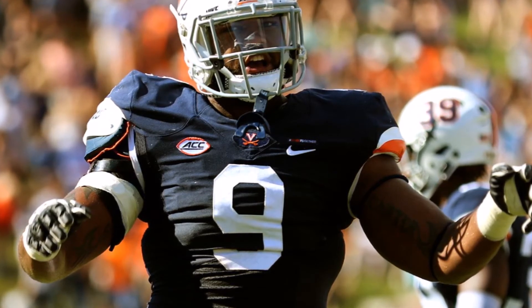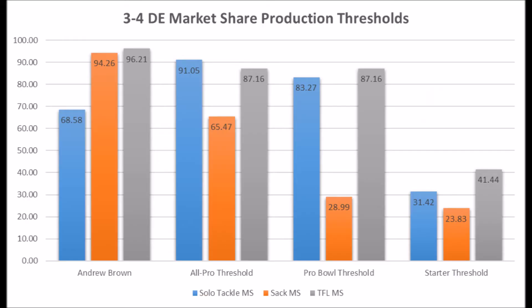When you look at Andrew Brown's production profile, he had a 68.58 solo tackle market share score, a 94.26 sack market share score, and a 96.21 tackle for loss market share score. My data goes back to the 1989 NFL draft class, specifically looking at 3-4 DN types, which is where most people have projected Andrew Brown. His only real issue is in solo tackle data — his sack data is very good, his tackle for loss data is also very good, but solo tackle is the one area where he misses the mark in terms of reaching the All-Pro to Pro Bowl threshold.